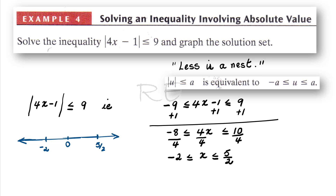On the number line, at negative 2 we're going to have an open bracket, and at 5/2 a close bracket, marking all the values in between. The interval notation of the solution set will be open bracket at negative 2 and close bracket at 5/2.